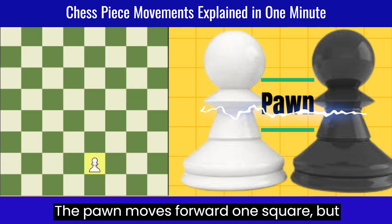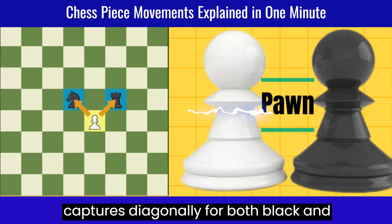The pawn moves forward one square, but captures diagonally, for both black and white.